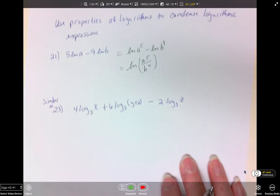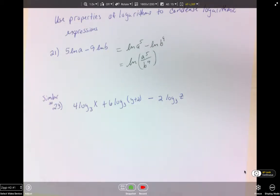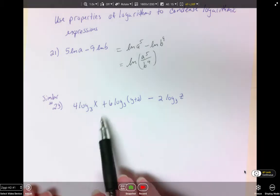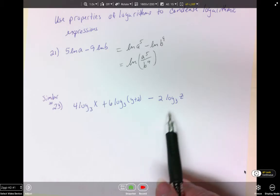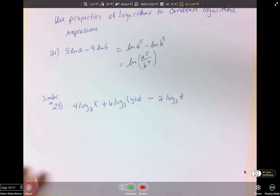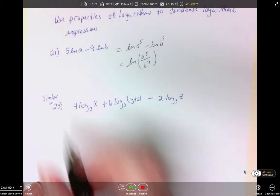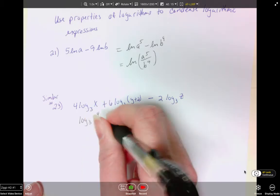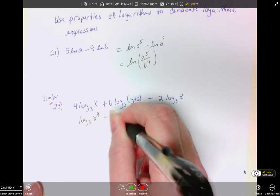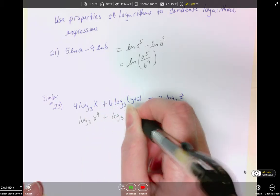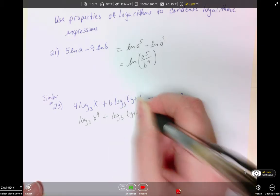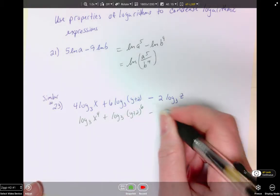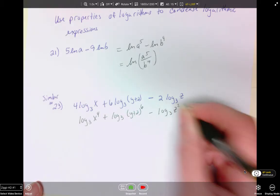So the last problem we're looking at is similar to 23 on the review. We have 4 log base 3 of x plus 6 log base 3 of y plus 2 minus 2 log base 3 of z. We'll start by moving our exponents back. So here we have log base 3 of x to the 4th plus log base 3 of y plus 2 to the 6th minus log base 3 of z squared.